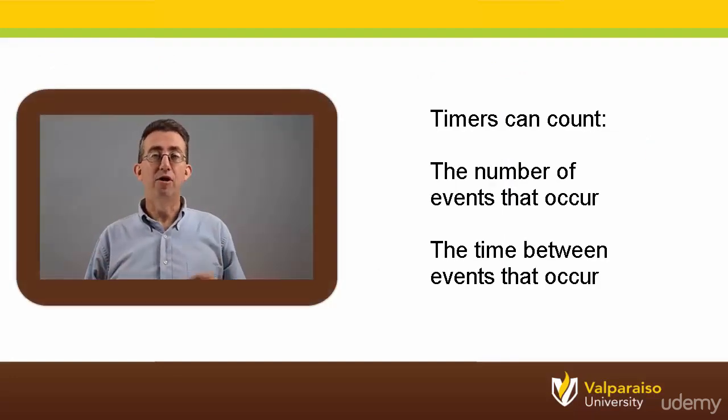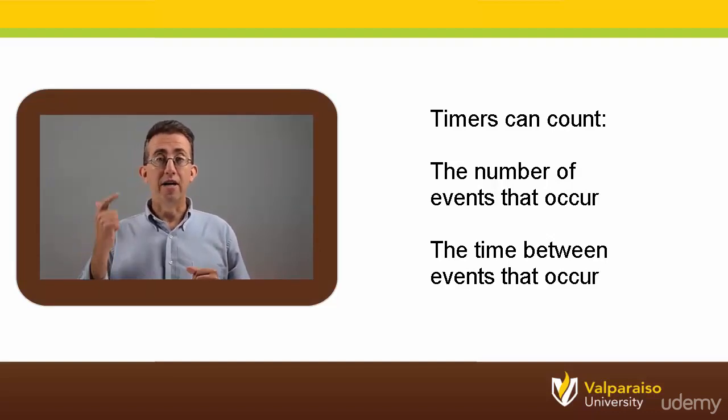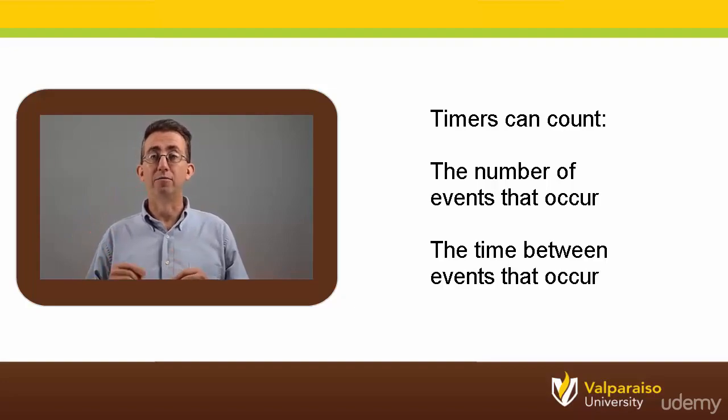Just remember, timers are peripherals that count. They can count the number of events, like an electric eye counting pizzas, or they can count the time between events, like the changes in a Hall Effect Sensor output.